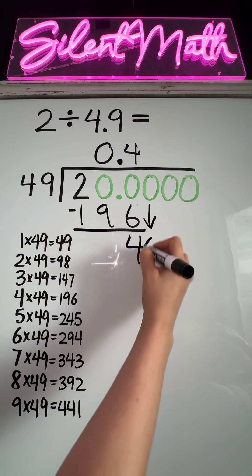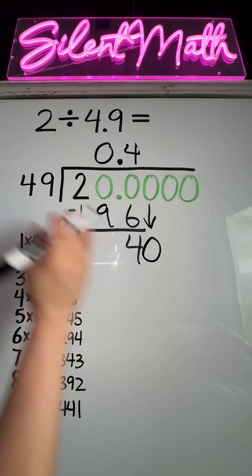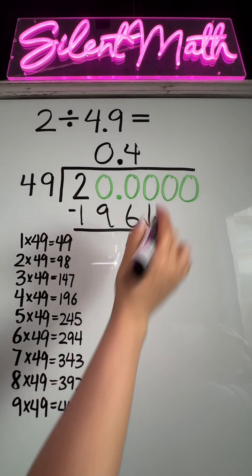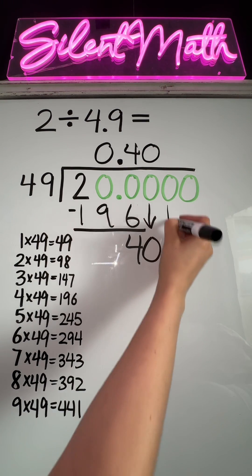You're going to bring down the next digit, which is zero, and repeat the process. How many groups of 49 can go into 40? Well, 40 is much smaller than 49, so we're going to say zero groups. We are going to start incorporating zero. So you can drop the zero.